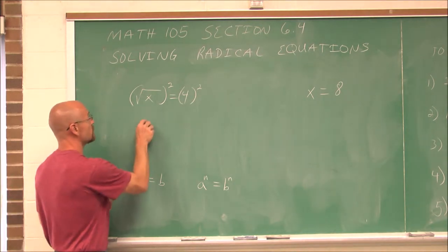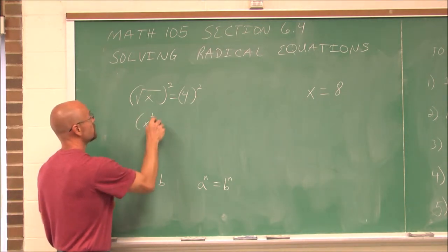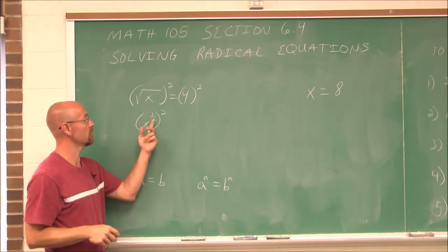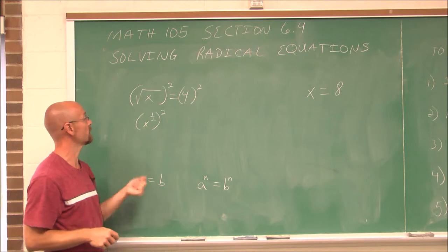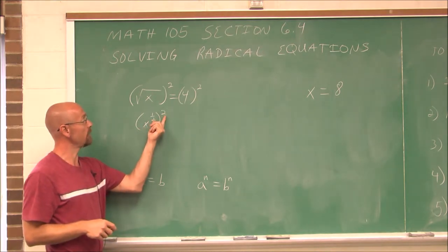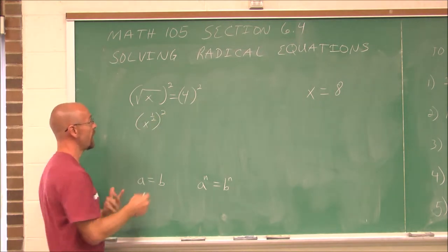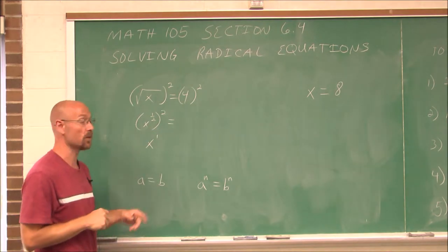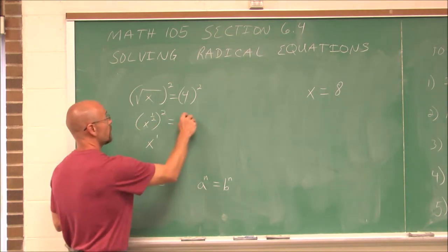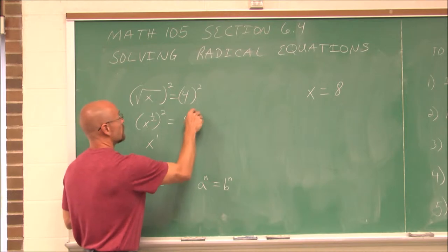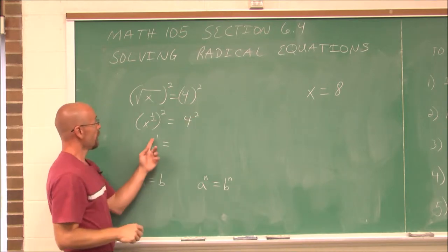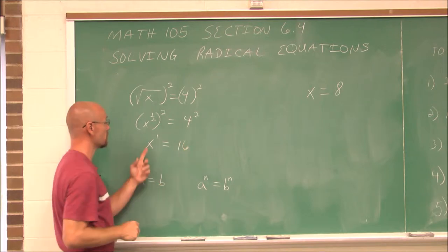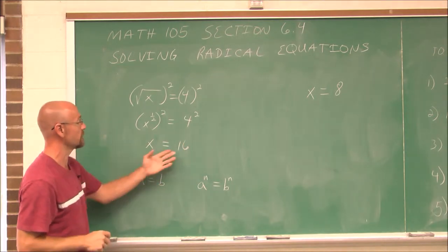Because if we think of it in terms of the rational exponent, a square root is the same as x to the 1/2 power. If I use the power rule, 2 times 1/2 is x to the 1st — half of 2 is 1. And 4 squared gives us 16. So x to the 1st, or just x, is 16.